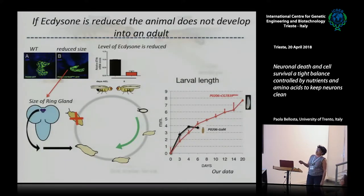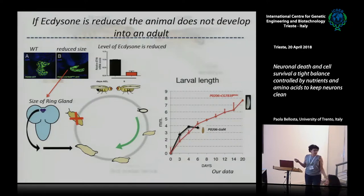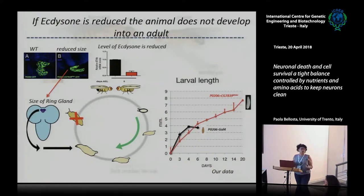If we block ecdysone production genetically — for example by reducing the size of this gland — then development is blocked. The animal doesn't undergo pupation and keeps growing, becoming a huge larva, until it dies even after three weeks. We've used this to study a model for obesity and fat communication.